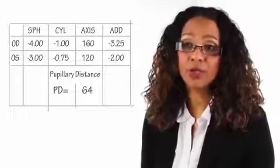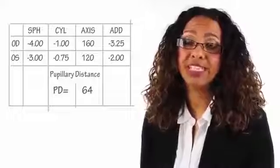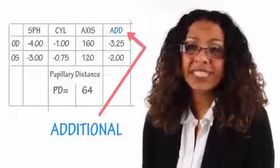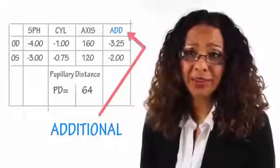The next term you'll see on your prescription is ADD, which stands for additional — probably the easiest term on there. ADD is used for bifocal and progressive lenses, and it's something which helps the vision by adding an additional feature onto the lens to help with activities such as reading or watching television.